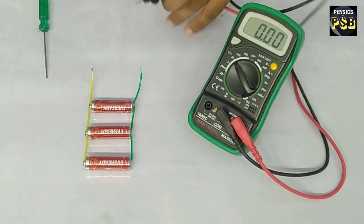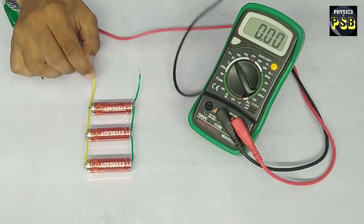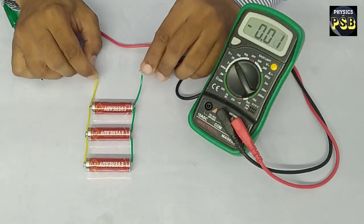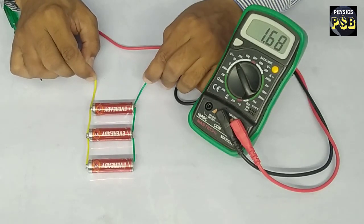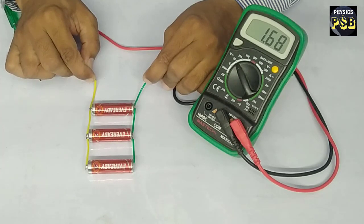I will place a red probe to this end and black probe to this end. It reads the EMF which is nothing but 1.68 volt.